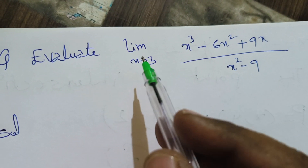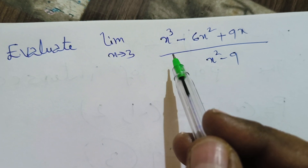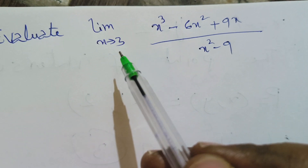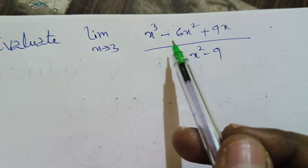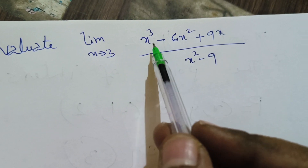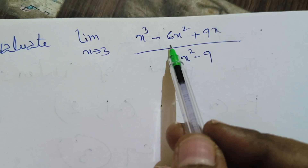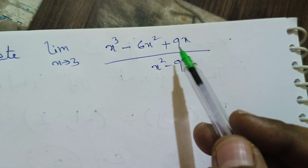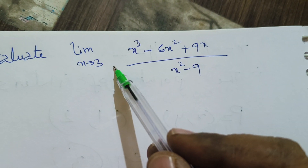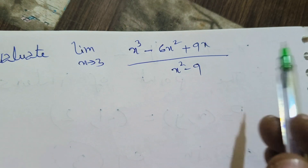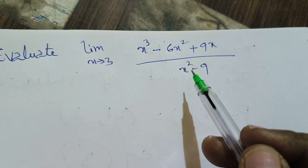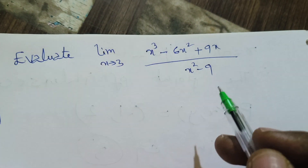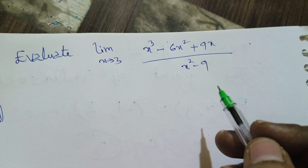We have to evaluate the limit as x tends to 3 of (x³ - 6x² + 9x) / (x² - 9). If I directly substitute x = 3, the numerator becomes 27 - 54 + 27 = 0, and the denominator becomes 9 - 9 = 0. So both numerator and denominator equal 0, giving an indeterminate form, but we need to find a definite value.